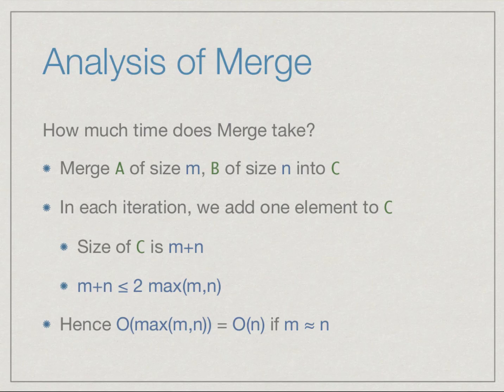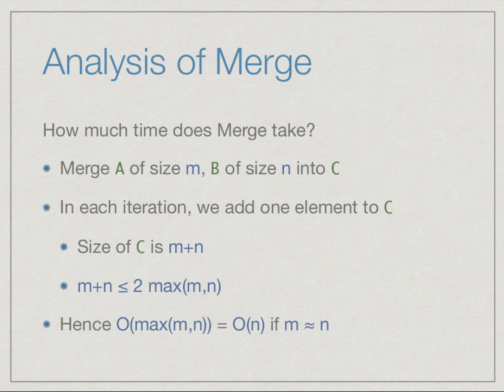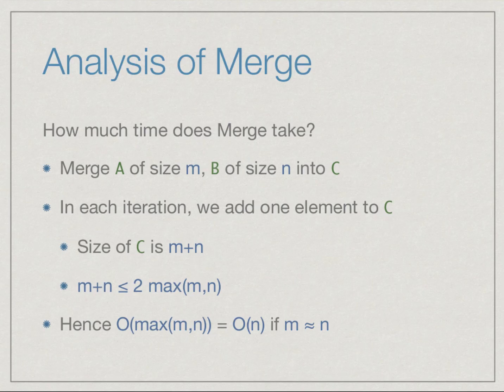Now notice that m plus n is at most twice the maximum of m and n. So we can say that merge as a function takes time of the order of maximum of m and n. In particular, very often like in merge sort we are taking two lists of roughly the same size. We divide a list into two halves and then merge them. So if both m and n are approximately the same size, then the max of m and n is just one of them. Essentially merge is linear in the size of the input list.